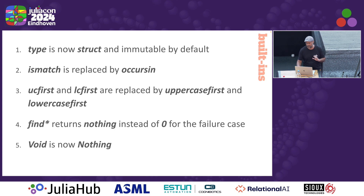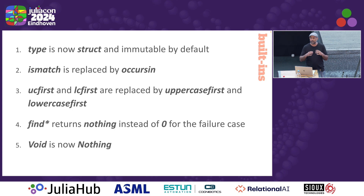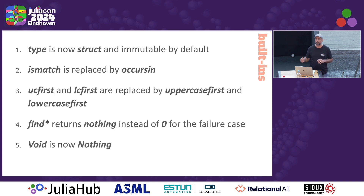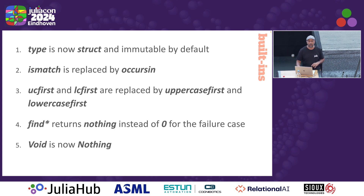I'm not going to read through all 40 or cover all of them — just probably one on each slide. In this case, the change to all of the find functions: find first, find last, find next, find all — they used to return 0 in the case where they could not find something. From 1.0 onwards, they started returning nothing. So we had to change signatures in a lot of places. We could not do a comparison with 0 or just add 1 to it. We had to do an isnothing check. Fairly easy, but it was the hardest thing on this slide.